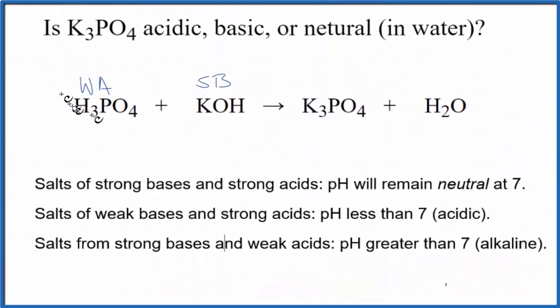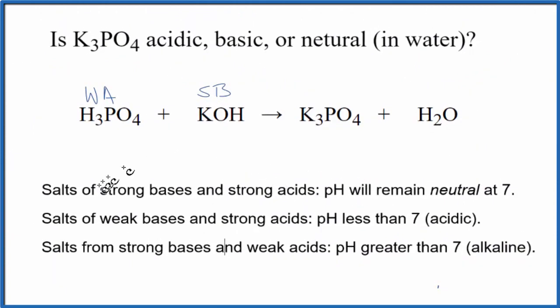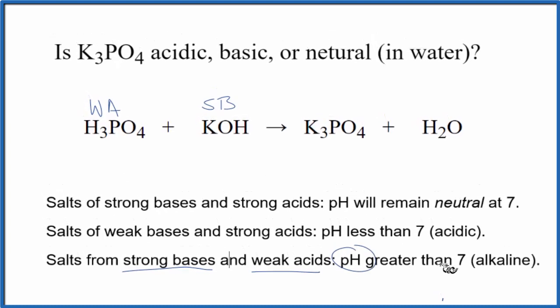Since we know that we have a weak acid and a strong base, we can look at our rules here. If we have a strong base and a weak acid, the pH will be greater than 7, giving us an alkaline solution.